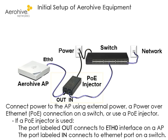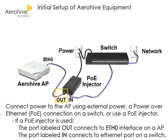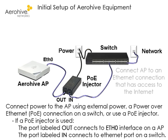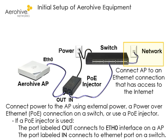If you use a PoE injector from Arrowhive, the injector must be plugged into a power outlet. The OUT port on the power injector connects to the Hive AP Ethernet Zero interface, and the IN port must be connected to a port on a switch. The Hive AP is managed by Hive Manager Online, so it will need access to the Internet. Please ensure the switch has Internet connectivity.